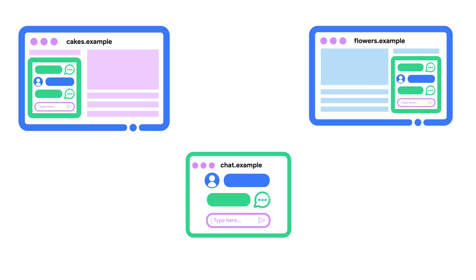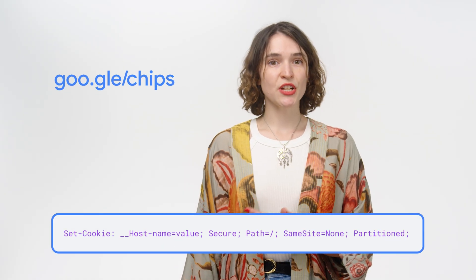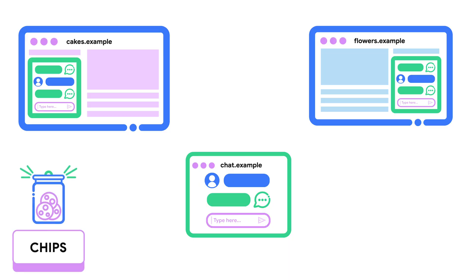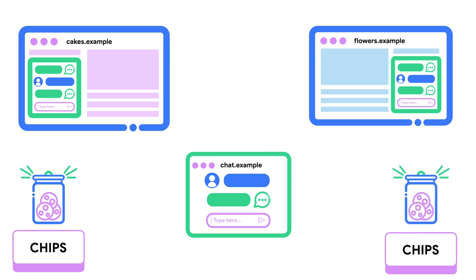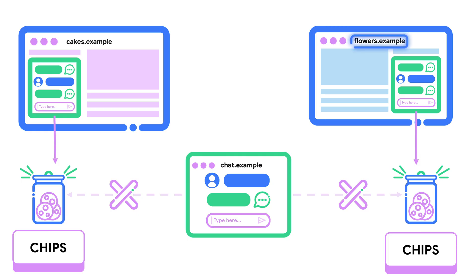Let's go back to our support chat example. To support the user, flowers.example doesn't need to know anything about cakes.example's support history for this user. In cases where the data can be isolated to the embedding site, adding the partitioned attribute to the cookie is the way to go. With CHIPS, or partitioned cookies, there is a separate cookie jar for each top-level site. The chat widget can set a partitioned cookie, ensuring the user has access to their support history even when navigating through the site. Chips can only be accessed by the same exact embed and embedder context they were set in — a partitioned cookie set by chat.example on flowers.example will not be accessible from chat.example on cakes.example, and vice versa. Similarly, chat.example alone will not be able to access the partitioned cookie set within the embedded context.